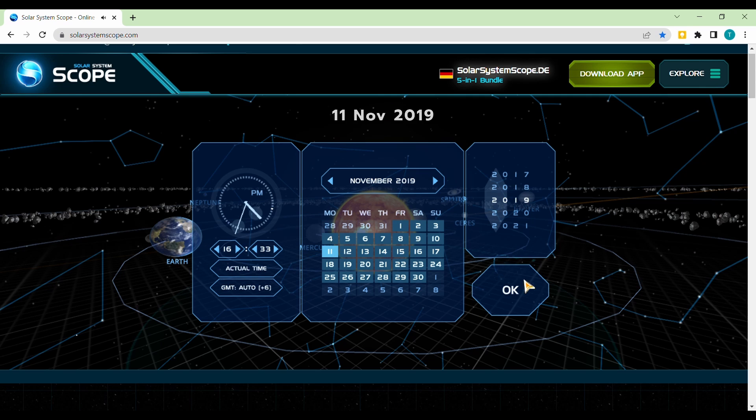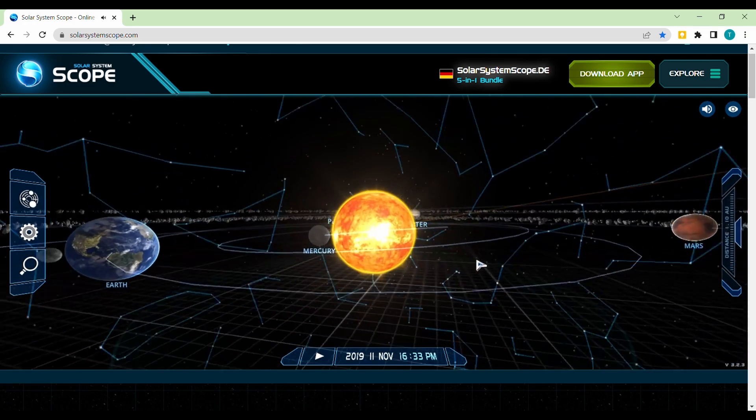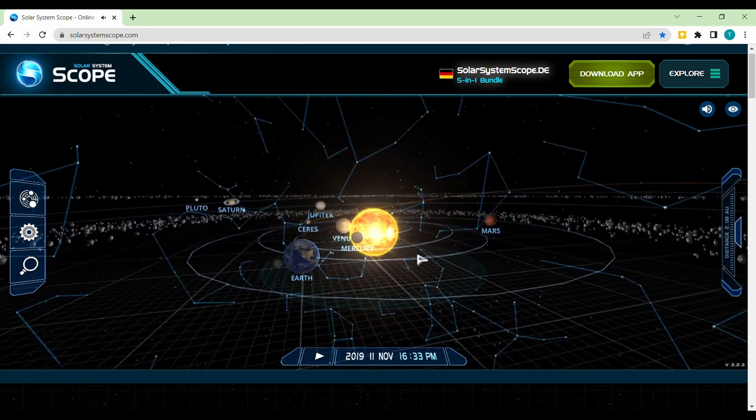11th November 2019 was the latest date on which transit of Mercury occurred. Mercury appears in front of the Sun as seen from the Earth.